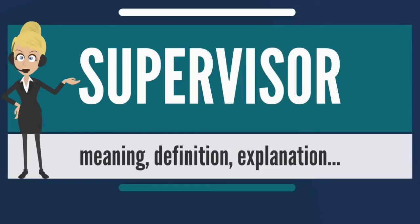The supervisor has several manager-like roles, responsibilities, and powers. Two of the key differences between a supervisor and a manager are: 1. The supervisor does not typically have hire and fire authority. Lacking hire and fire authority means that a supervisor may not recruit the employees working in the supervisor's group,